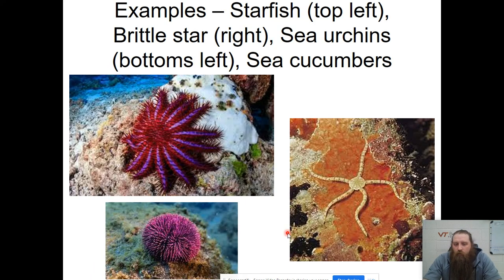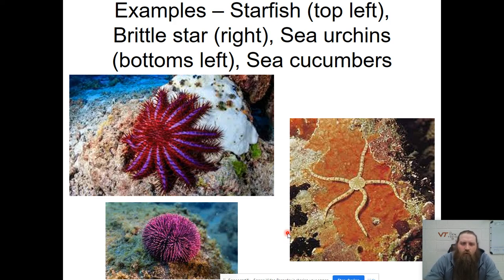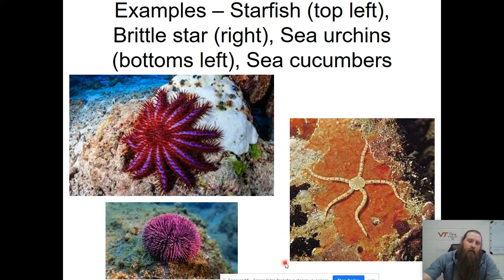Here you can see a bunch of echinoderms. Top left is a crown of thorns starfish. On the right is a brittle starfish, and at the bottom left we have a sea urchin.